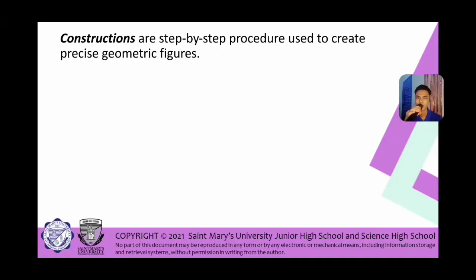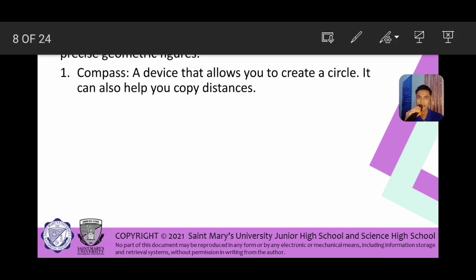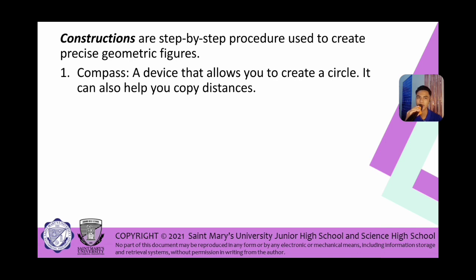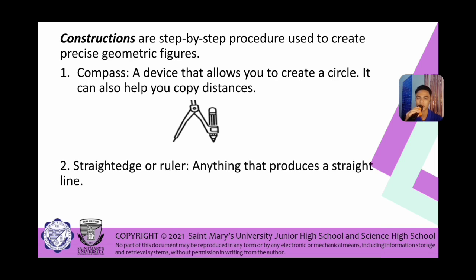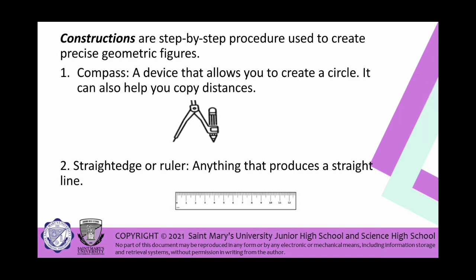Let's go over our first target: constructions. Constructions are step-by-step procedures used to create precise geometric figures wherein no computation is involved. The materials we need are: first, a compass — a device that allows you to create a circle and copy distances; and second, a straight edge or ruler — anything that produces a straight line, used to draw straight lines but not to measure.